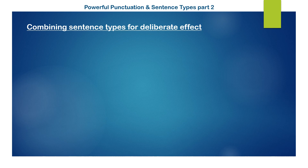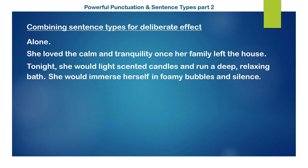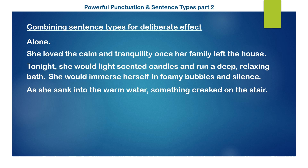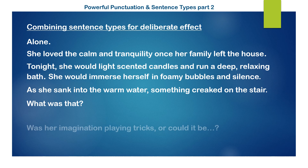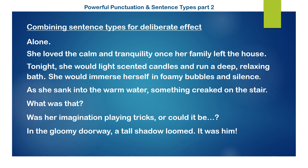Let's look at ways to combine sentence types in a narrative. 'Alone.' This single word conjures many possibilities, yet the following longer sentence gives reassurance: 'She loved the calm and tranquility.' Subsequent details restore a positive mood — non-threatening: 'She would light scented candles. Run a deep, relaxing bath.' Until something creaked on the stair. We are alert. 'What was that?' The urgency of the question sparks alarm. 'Could it be?' This fragment implies a threat. 'In the gloomy doorway, a tall shadow loomed. It was him.' An exclamatory close provides an effective cliffhanger.